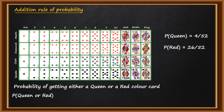Now we have to check: is it possible to have a red color card as well as a Queen at the same time? The answer is yes — there are two possibilities. There are two cards which are both red and a Queen. So that means this event is mutually non-exclusive.